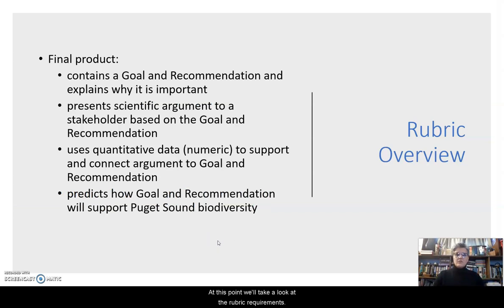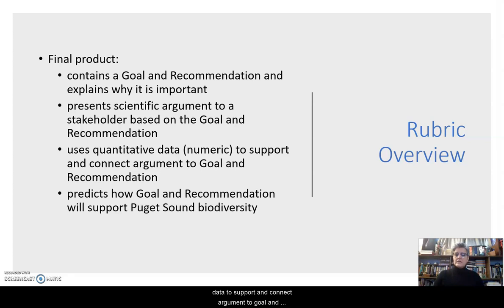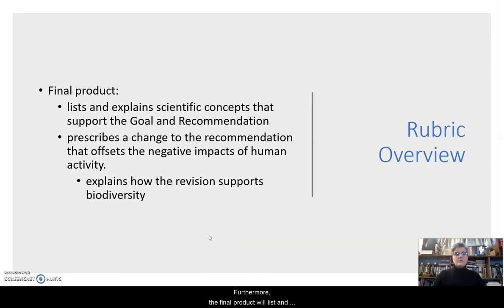At this point, we'll take a look at the rubric requirements. Your final product will contain a goal and a recommendation and explains why this particular goal and recommendation are important. It presents a scientific argument to a stakeholder based on the goal and recommendation you've chosen. It also uses quantitative or numeric data to support and connect the argument to the goal and recommendation. It will also predict how that goal and recommendation will support Puget Sound biodiversity. Furthermore, the final product will list and explain scientific concepts that support the goal and recommendation. It also prescribes a change to the recommendation that offsets the negative impacts of human activity and explains how the revision supports biodiversity.